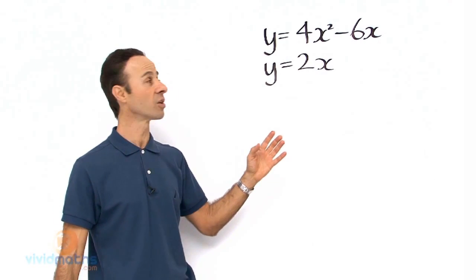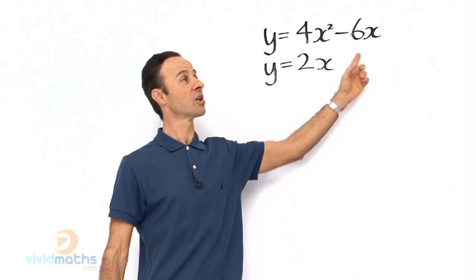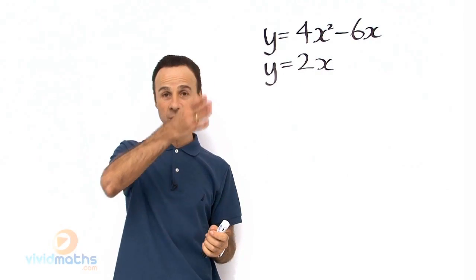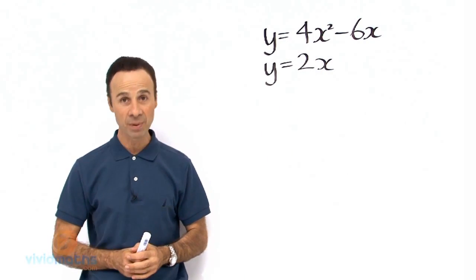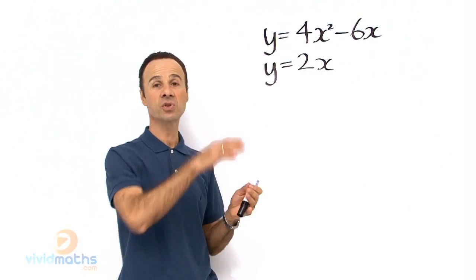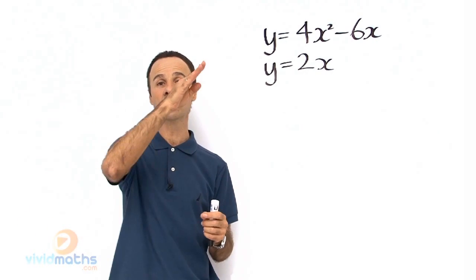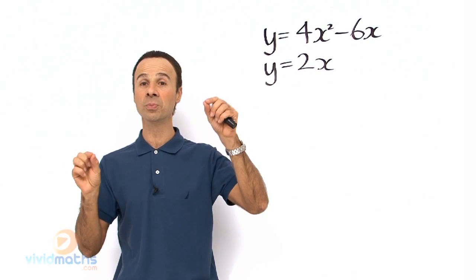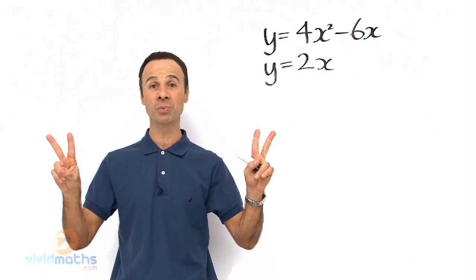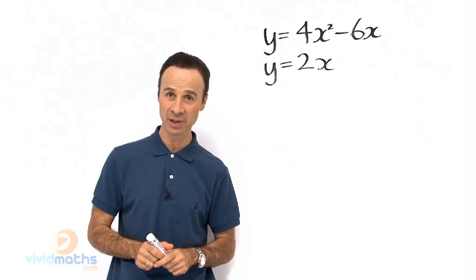So what we need to realize and recognize is that when you have an equation like this with a power of 2, it is going to be a curve like a parabola. And this one here is going to be a straight line, which means a curve intersecting with a straight line is going to intersect in two places. What does that mean? It means two separate answers, in other words two possibilities.